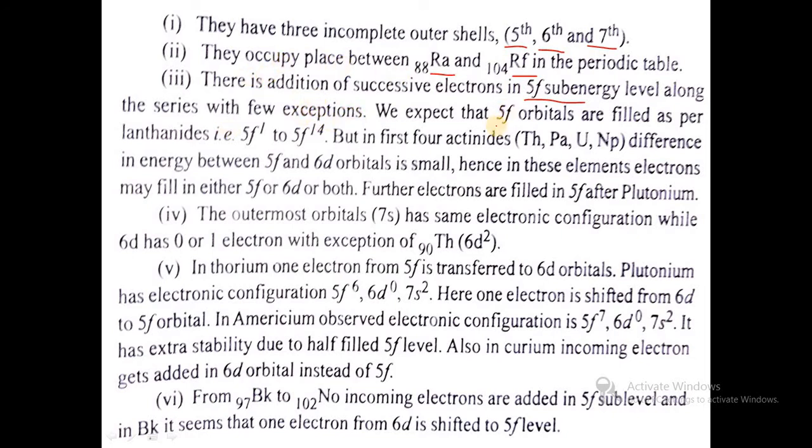The 5f orbitals are filled as per lanthanides, 5f1 to 5f14. But in the first four actinides - thorium, protactinium, uranium, and neptunium - the difference in energy between the 5f shell and 6d shell is very small. Hence in these elements, electrons may fill in either 5f or 6d or both. Further electrons are filled in 5f after plutonium continuously. The outermost orbital 7s has the same electron configuration while 6d has 0 to 1 electron.